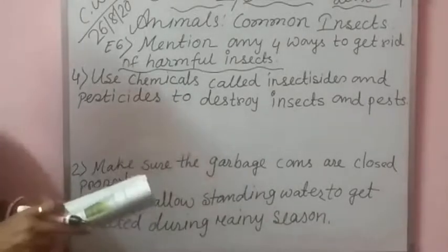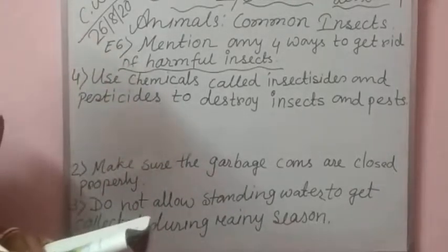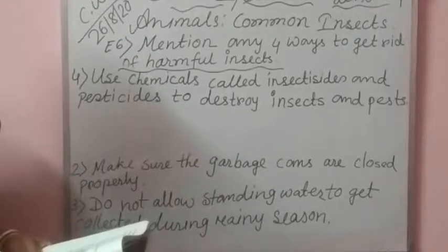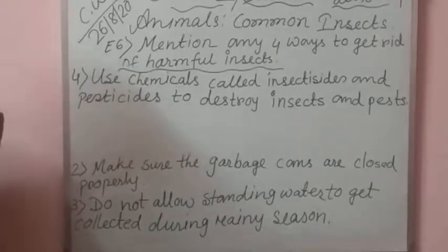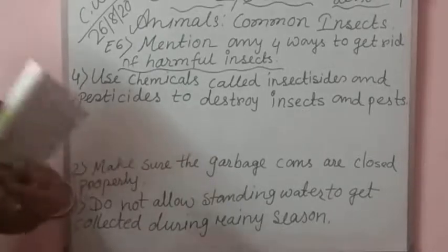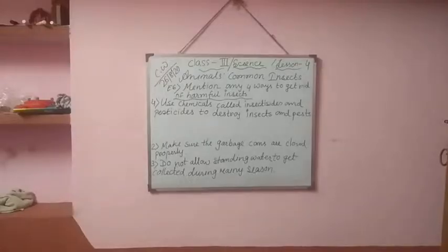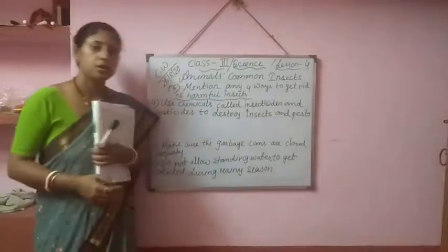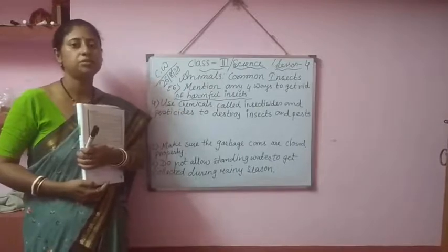So number 1: keep all the drains of your house clean, especially of the kitchen and bathroom. Number 2: make sure the garbage cans are closed properly. Number 3: do not allow standing water to get collected during rainy season. Number 4: use chemicals called insecticides and pesticides to destroy insects and pests. Students, everybody write this in your copy, and next step I will continue. Thank you.